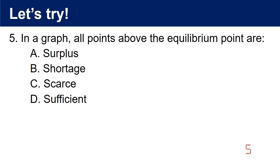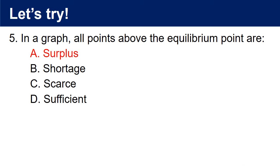Question 5: In a graph, all points above the equilibrium point are: a. Surplus, b. Shortage, c. Scarce, d. Sufficient. The answer is a. Surplus.